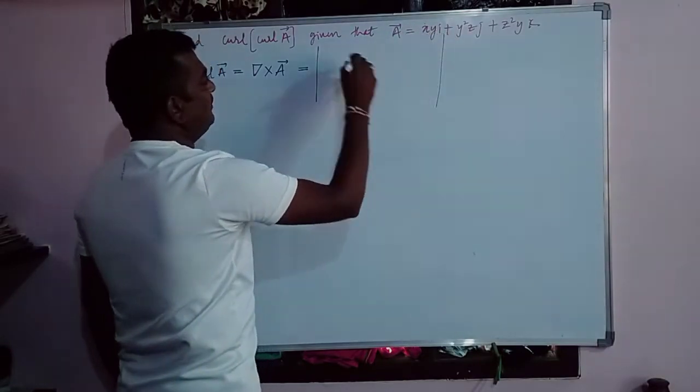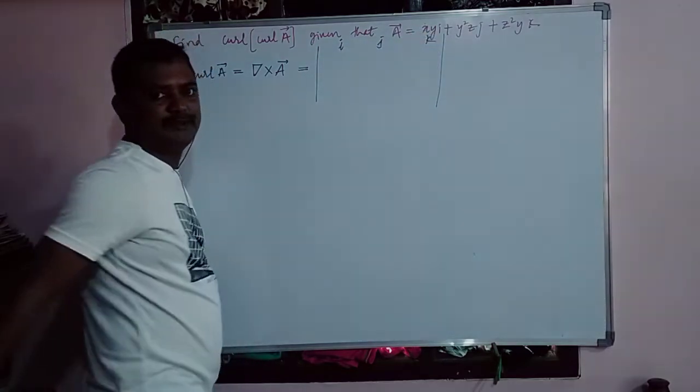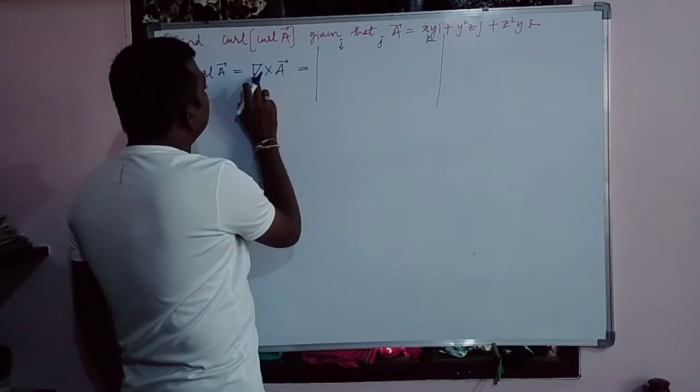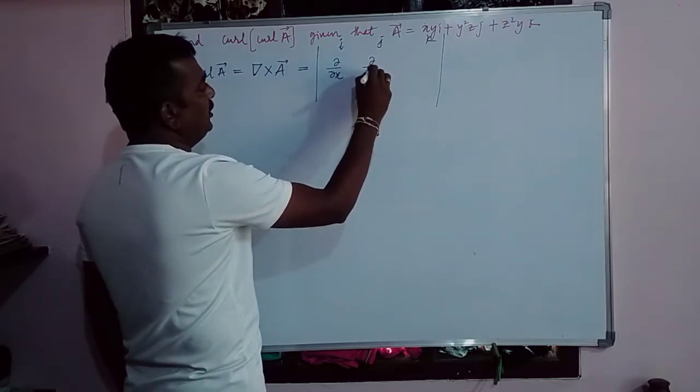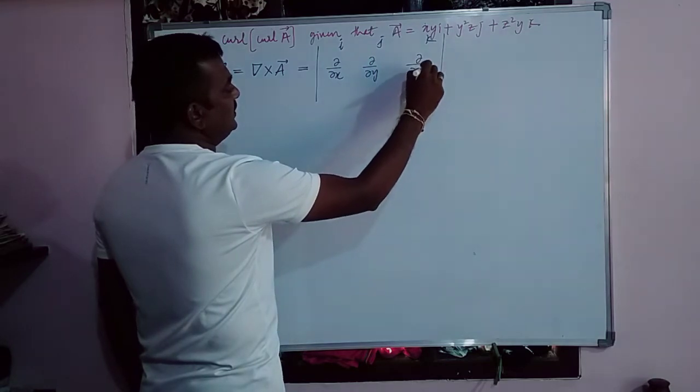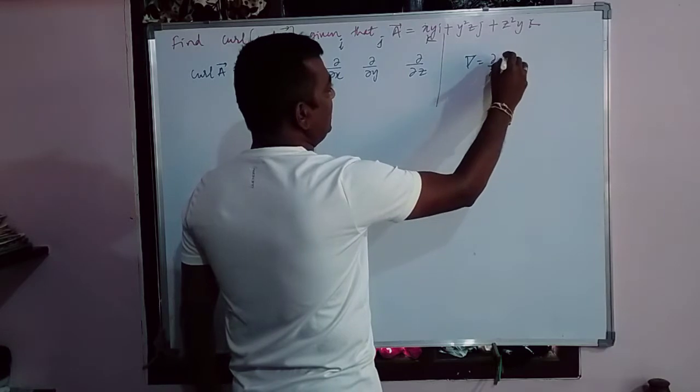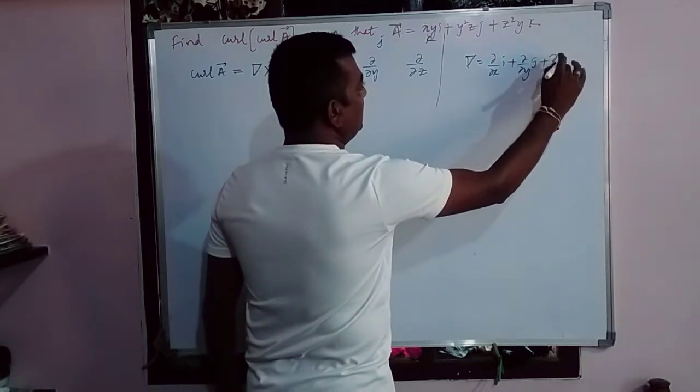So what is the definition of curl A? Curl A means del cross vector A. This is the cross product of two vectors, del and vector A, calculated as a third-order determinant. In the first row we write i, j, k. The second row is the definition of del: del means dou/dx i plus dou/dy j plus dou/dz k.